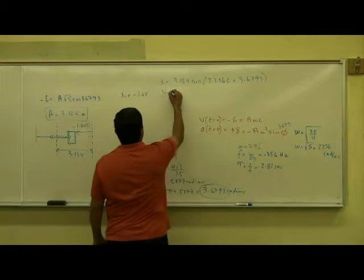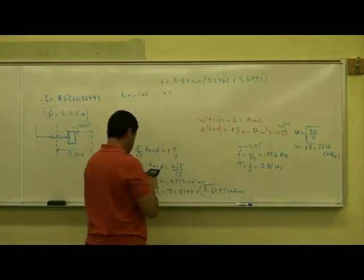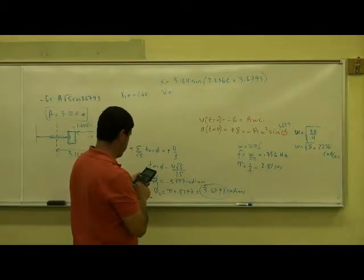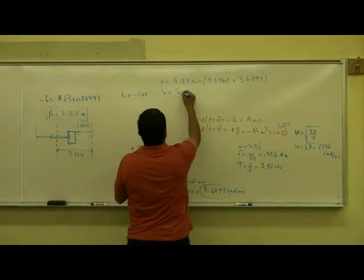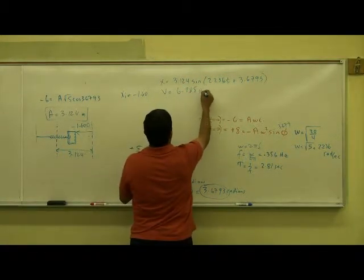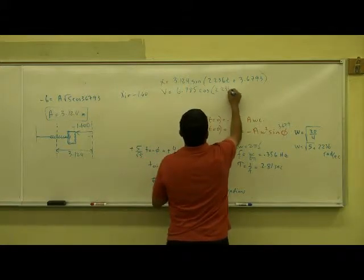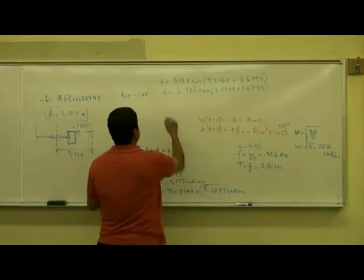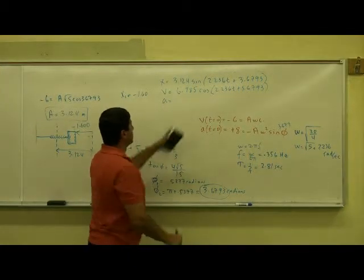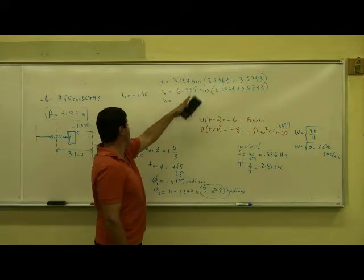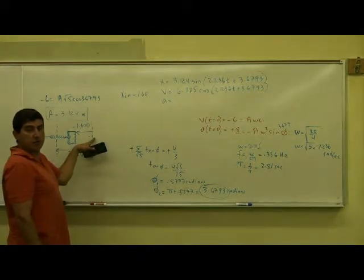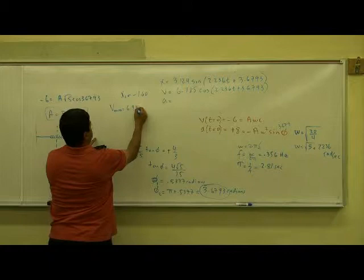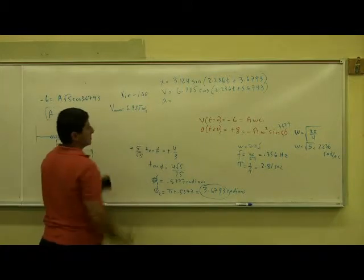Now, what's my general velocity equation? This times that. 3.124 times 2.236, 6.985 cosine of this thing. By the way, this is my maximum velocity. When is it going to have that maximum velocity? When it returns back to the equilibrium point. We can say V max is 6.985 meters per second.